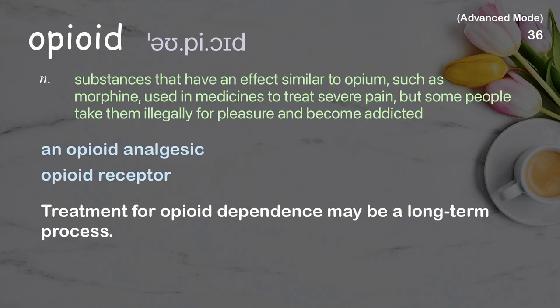Examples: an opioid analgesic, opioid receptor. Treatment for opioid dependence may be a long-term process.